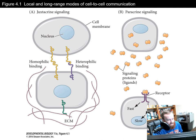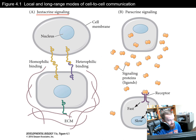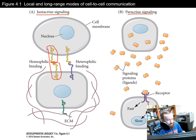You have local signaling or juxtacrine signaling, which is this physical connection where membrane-bound receptors bind to extracellular proteins or the membrane-bound receptors of a neighboring cell. You can see these proteins span two cells with an interconnection between them. The other type is paracrine signaling — this is longer-distance signaling that happens when the cell excretes signaling molecules.